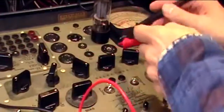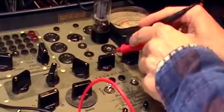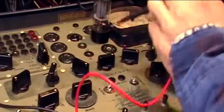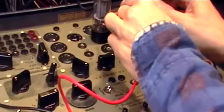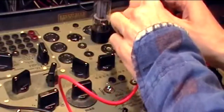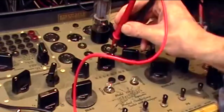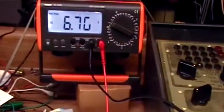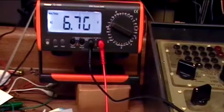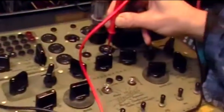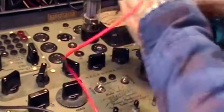First we'll look at the filament voltage, and you can see 6.7 volts. I got it set for 6.3 - it's a little hot but she's there. Now what I'm going to do is switch my meter to DC and we're going to check our screen and our plate.